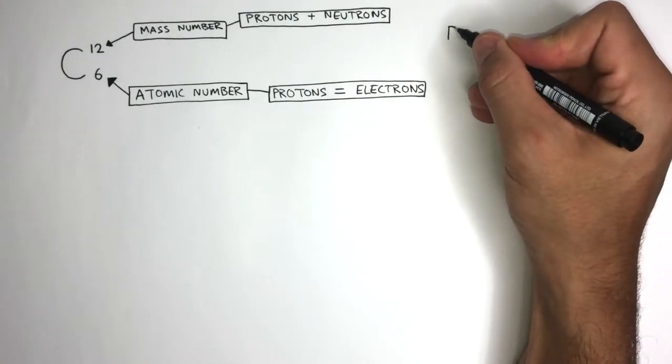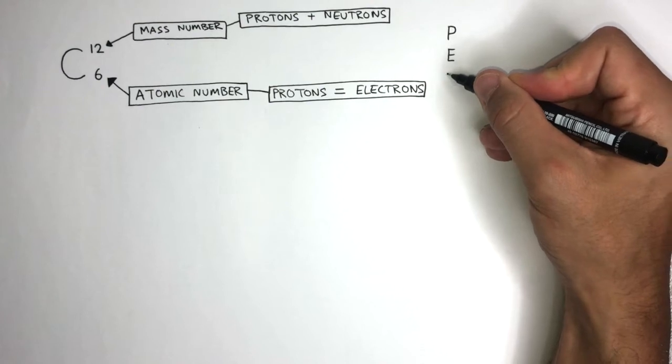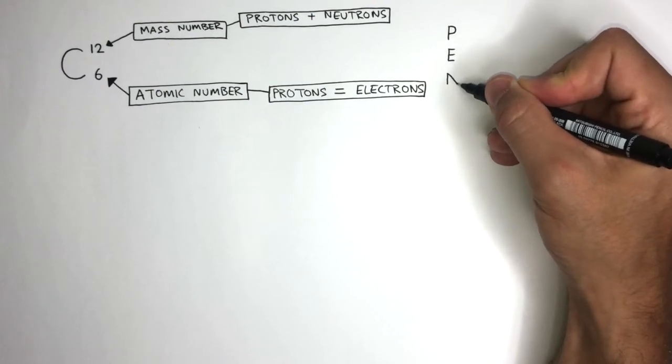A good technique is to write P for protons, E for electrons, and then N for neutrons, where we'll calculate exactly how many subatomic particles a carbon element has.